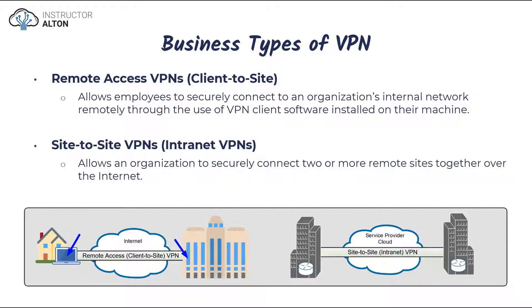The site-to-site VPN, or intranet VPN, is straightforward — as depicted on screen. If a business has two different sites and wants to connect them together using defense in depth to ensure the connection is really secure, they can implement VPN connections between both buildings. That gives them a site-to-site or intranet VPN between the two buildings, making sure the connection between their two sites is as secure as possible when connecting over a public internet link.